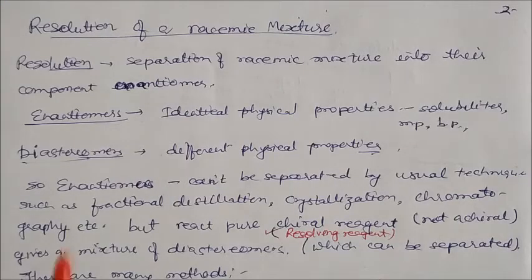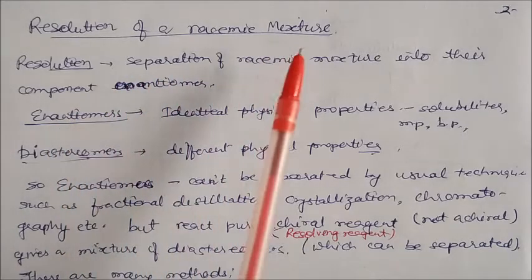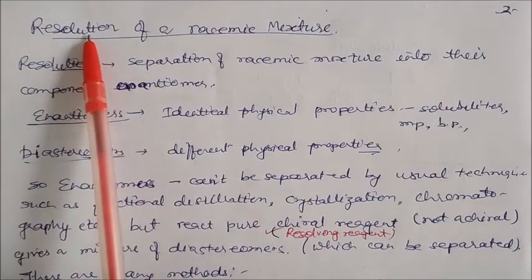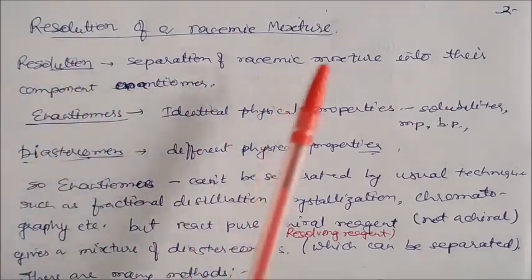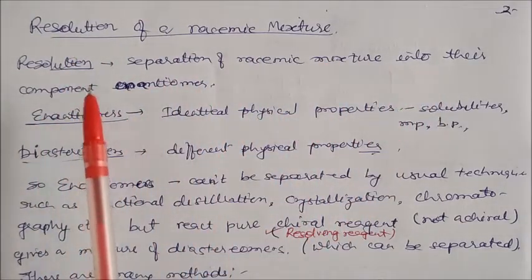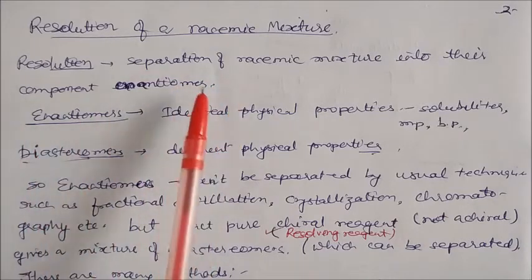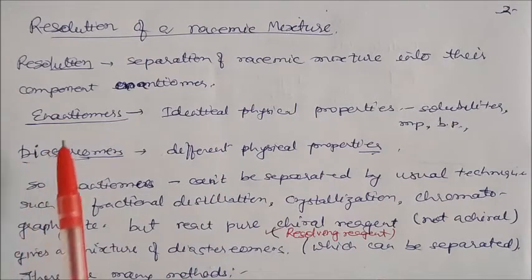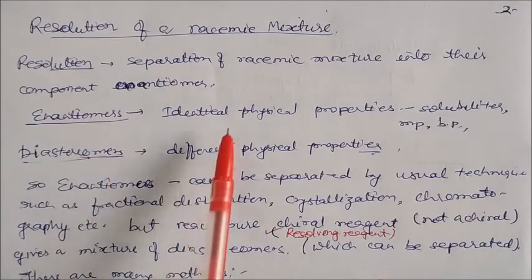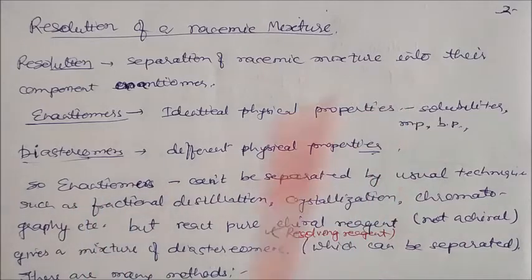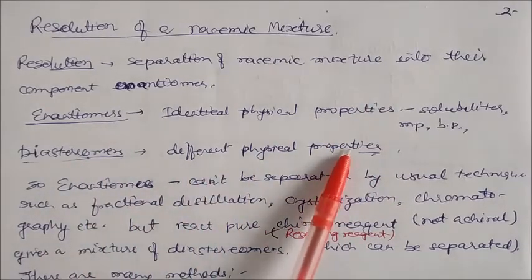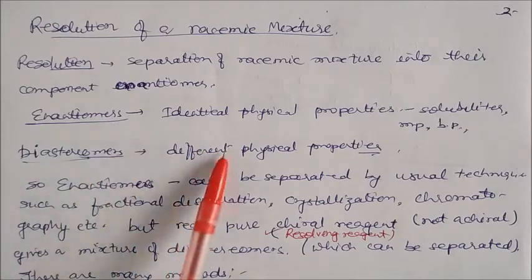Now, resolution of a racemic mixture — how we can resolve a racemic mixture, and what is resolution? The term resolution means the separation of the racemic mixture into its component enantiomers — D is separated and L is separated. We already know enantiomers have identical physical properties like solubility, melting point, and boiling point, whereas diastereomers have different physical properties.